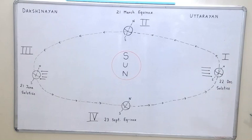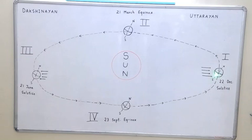In the first stage, the sun's rays directly fall on the southern hemisphere, but they cannot reach the north pole. Therefore, the southern hemisphere experiences summer and the northern hemisphere experiences winter.